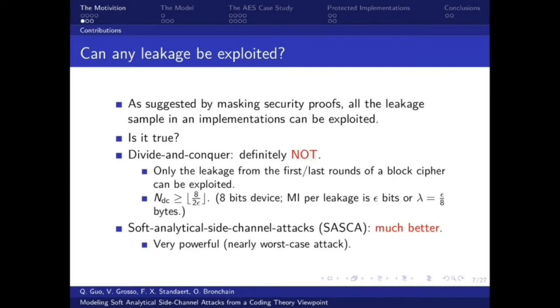So a natural question is, can any leakage be exploited? As suggested by masking security proof, all the leakage samples in the implementation can be exploited. Is it true? For the divide and conquer approach, it is definitely not true. Actually, only the leakage from the first and last rounds of block ciphers can be exploited. But the divide and conquer approach has the advantage that its security evaluation is very easy. For instance, for an 8-bit device, if we assume for a bivariate leakage and assume that mutual information per leakage is epsilon bits or if we do normalization has lambda bytes, then we can easily bound that the required number of traces is this.